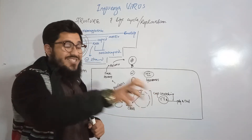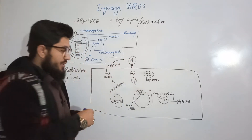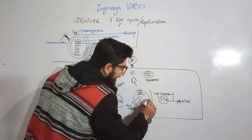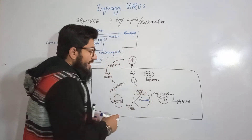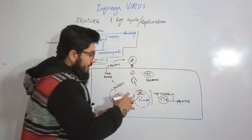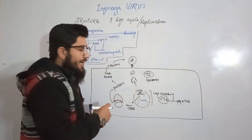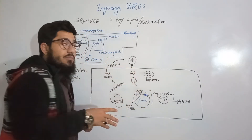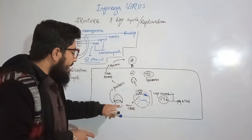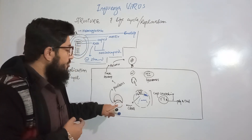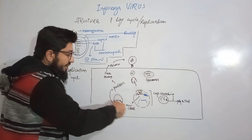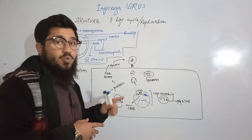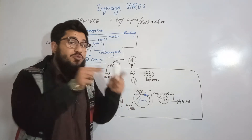Inside the nucleus, there are host RNAs that have 5' caps and poly-A tails. The viral negative sense RNA snatches these 5' caps and poly-A tails from the host RNA and attaches them to itself. By doing this, the viral RNA becomes complementary RNA — it is now able to go and bind to ribosomes and translate to synthesize proteins.